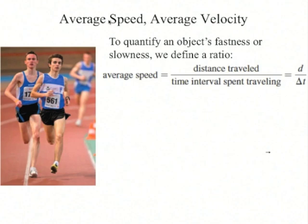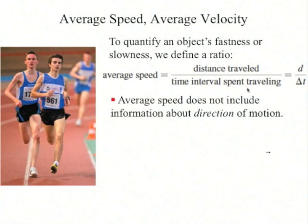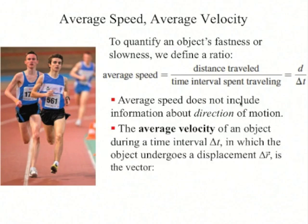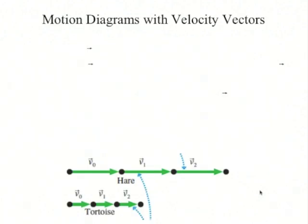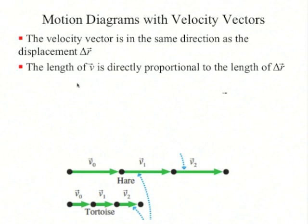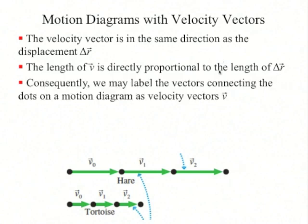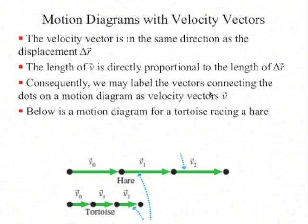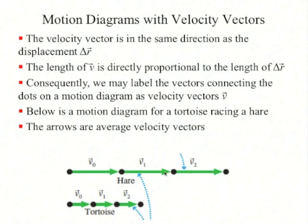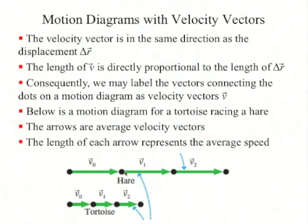To quantify an object's fastness or slowness, we define a ratio. Average speed is the distance traveled divided by the time interval spent traveling. This doesn't include information about the direction of motion, so we define the average velocity as the displacement vector divided by the time interval delta t. The velocity vector is in the same direction as the displacement vector, and its length is directly proportional to the length of delta r. Consequently, we may label the vectors connecting the dots in a motion diagram as velocity vectors v.